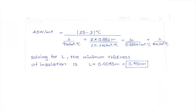Putting numbers into the equation, with the constant heat transfer rate of 45 W/m² equal to delta T over the sum of resistances, and solving for L — the thickness of the fiberglass — we get a value of 0.0045 meters or 0.45 centimeters. Now let's move to different geometries.